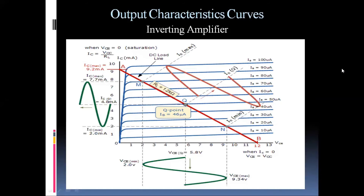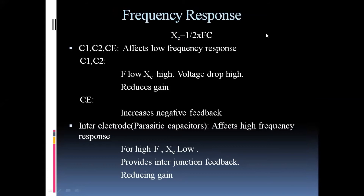Next we look at the frequency response of the amplifier circuit. The capacitive reactance is given by Xc = 1 / (2πfC), where f is the frequency of the input signal and C represents the different capacitors. Different capacitors affect the low and high frequency regions. The low frequencies are generally affected by the coupling capacitor and bypass capacitor. When frequency is low, Xc is high, meaning high reactance, and the voltage drop across the capacitance is more, so less voltage is transferred to the next stage.